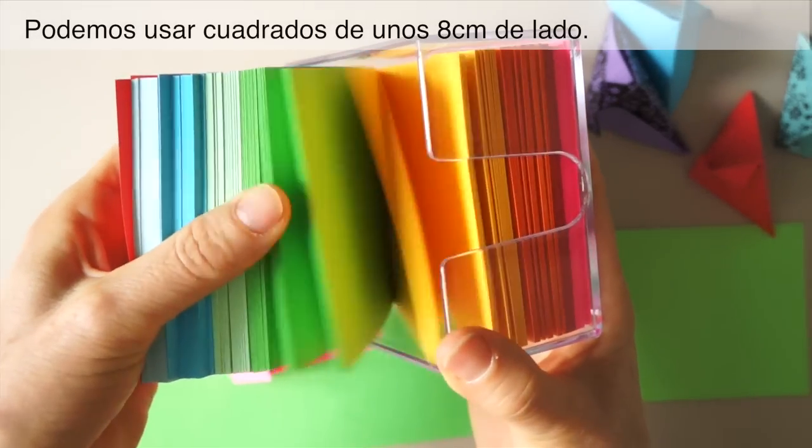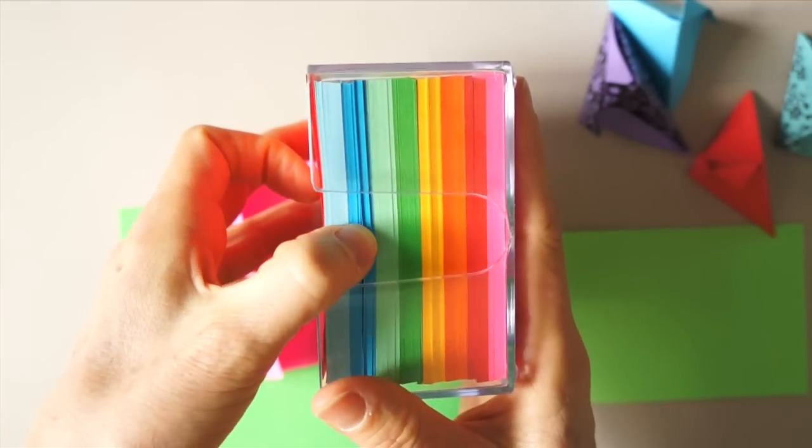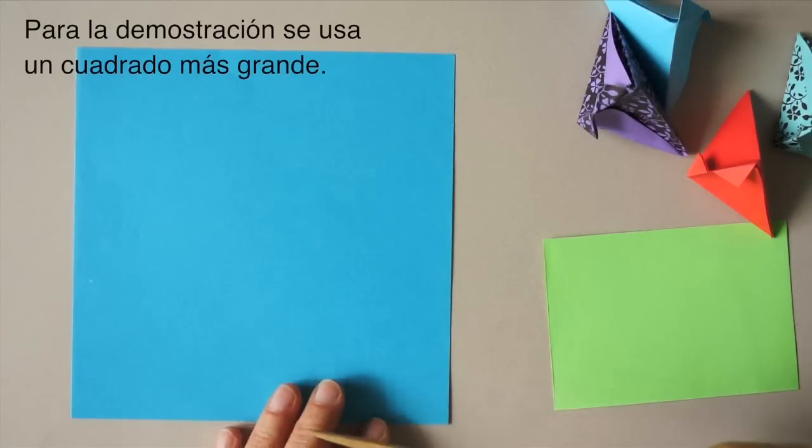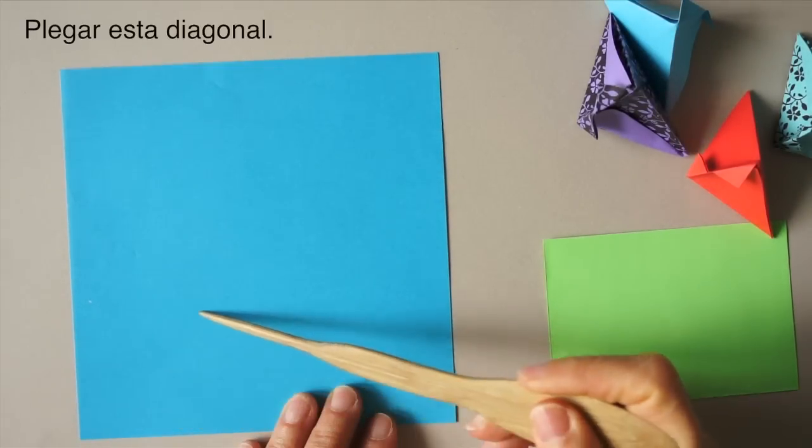We can begin with the squares like this about 3 by 3 inches. For the demonstration we use a larger square. Fold this diagonal.